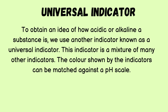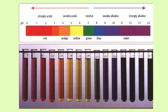The next type of indicator is the universal indicator. To obtain an idea of how acidic or alkaline a substance is, we use another indicator known as a universal indicator. This indicator is a mixture of many other indicators. The color shown by the indicator can be matched against a pH scale. If it's strongly acidic, the pH range will be around the red region. And if it's strongly alkaline, the blue-violet region, it reaches up to 14.